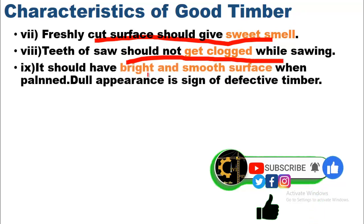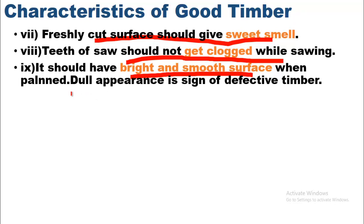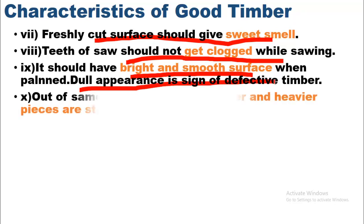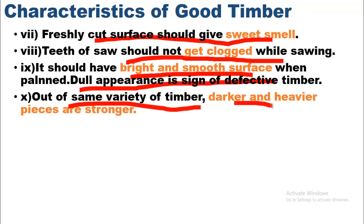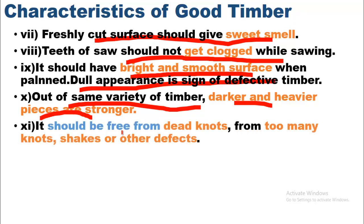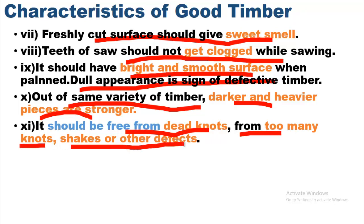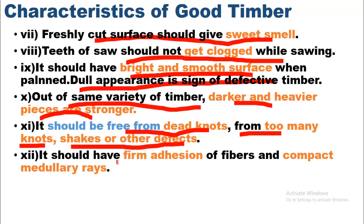A freshly cut surface should give a sweet smell. The teeth of a saw should not be clogged while cutting. It should have a bright and smooth surface when planed — a dull appearance is a sign of defective timber. Among varieties of timber, darker and heavier pieces are generally stronger. It should be free from dead knots, too many knots, and shakes. It should have firm adhesion of fibers and compact medullary rays.